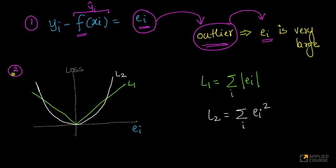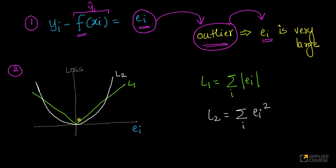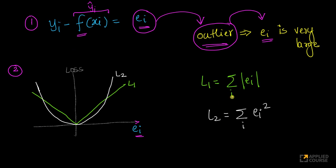The second key observation: let's draw ei on the x-axis and the loss on the y-axis. L1 can be written as summation over i of the absolute value of ei — so if you plot it, L1 looks like the absolute value function, a straight 45-degree line. L2 is summation over i of ei squared — so with respect to ei, the loss is squared, which means it looks like a parabola. L2 corresponds to a parabolic curve while L1 corresponds to a straight line.